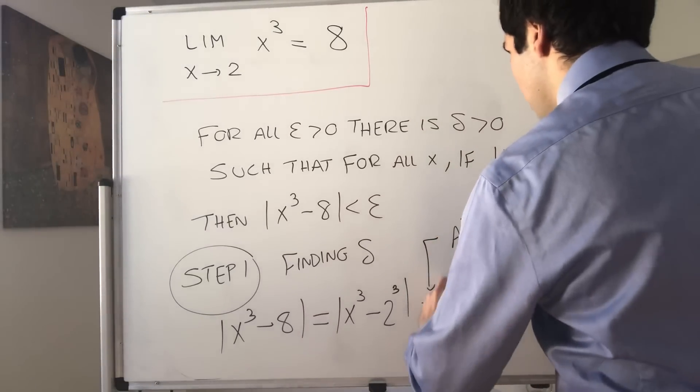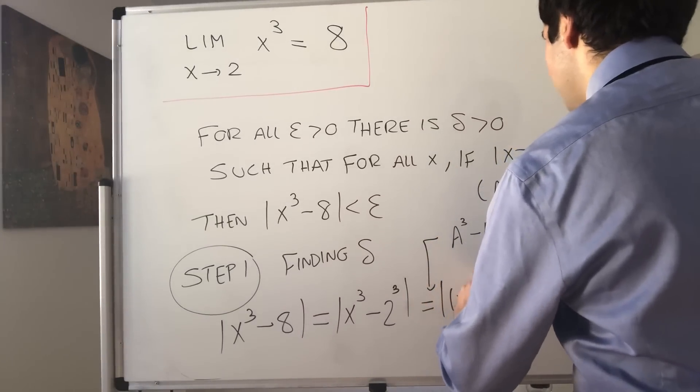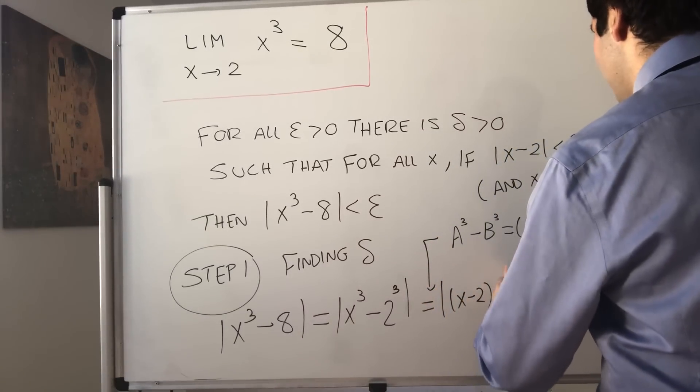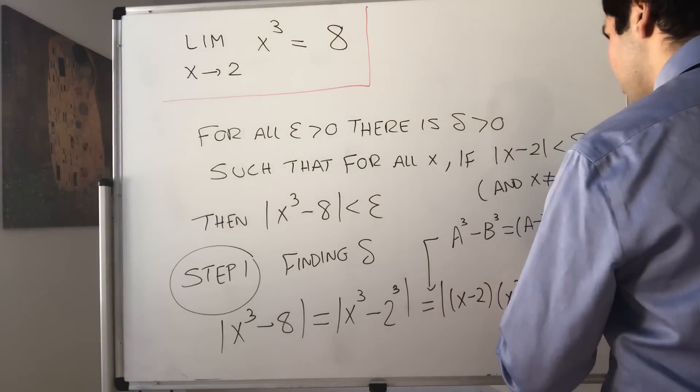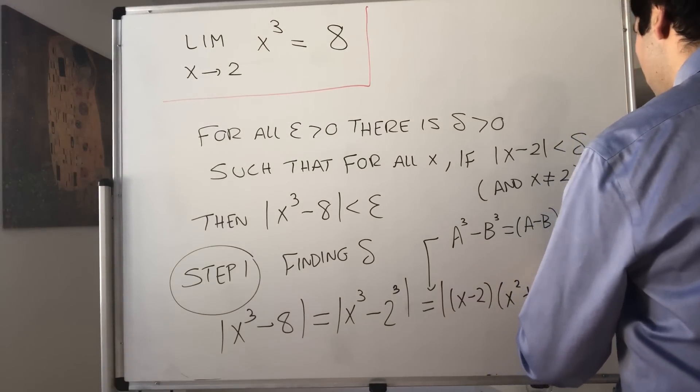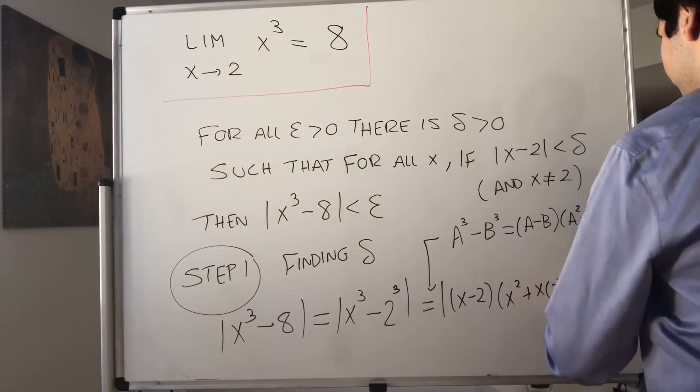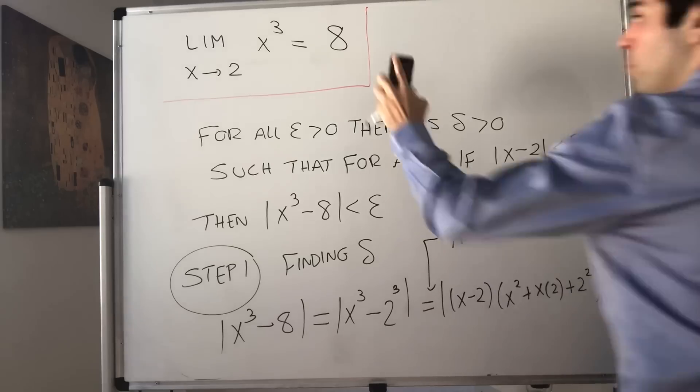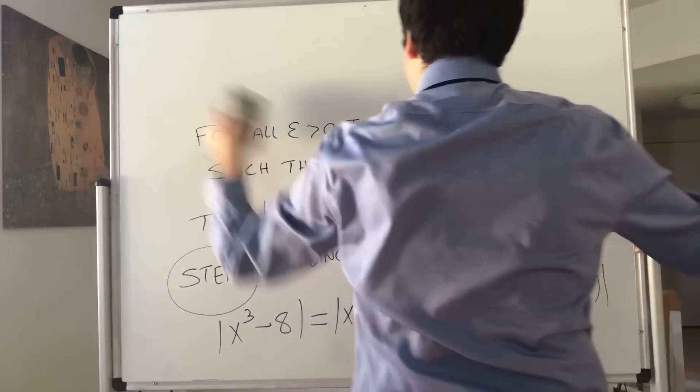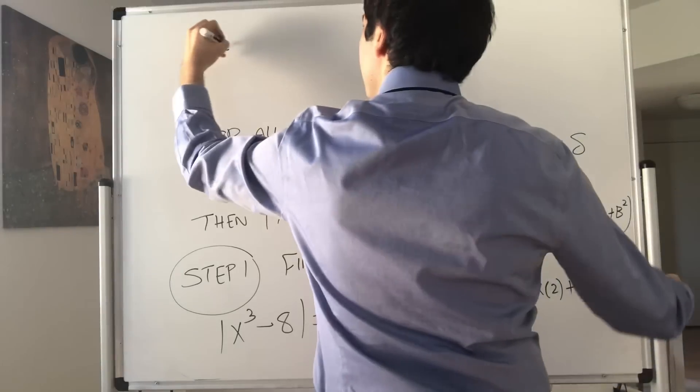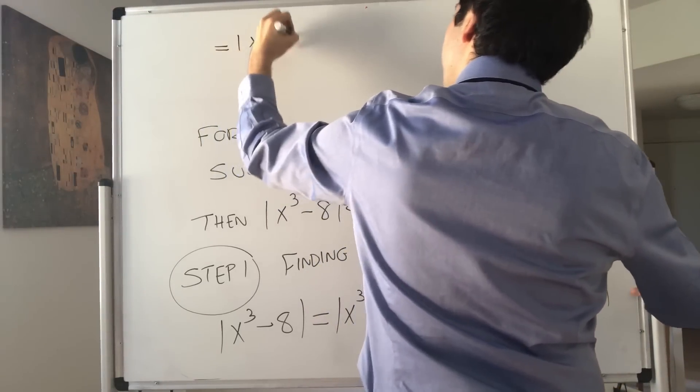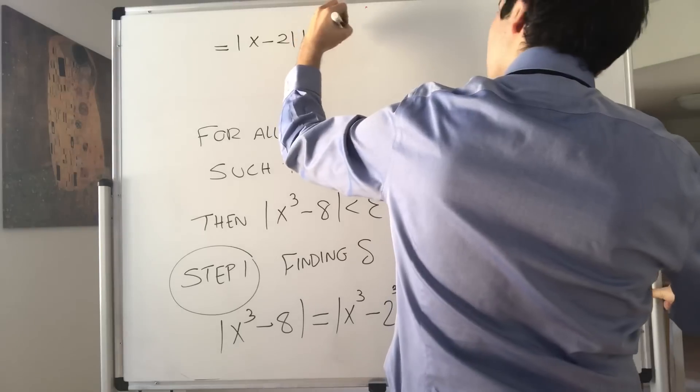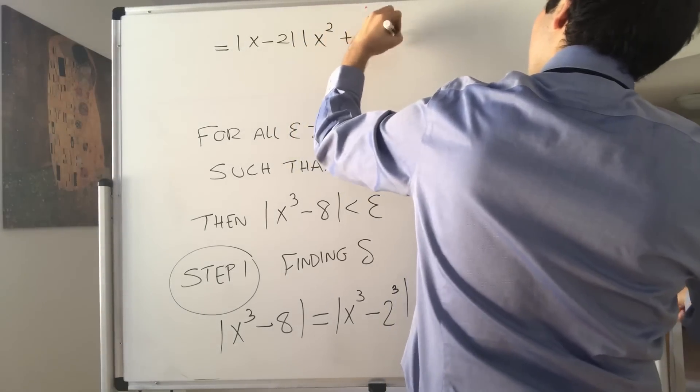You can simply get that by expanding out this part and you'll find some beautiful simplifications. Why is that useful? Because now this becomes x minus 2 times x squared plus x times 2 plus 2 squared, which becomes x minus 2 times x squared plus 2x plus 4.